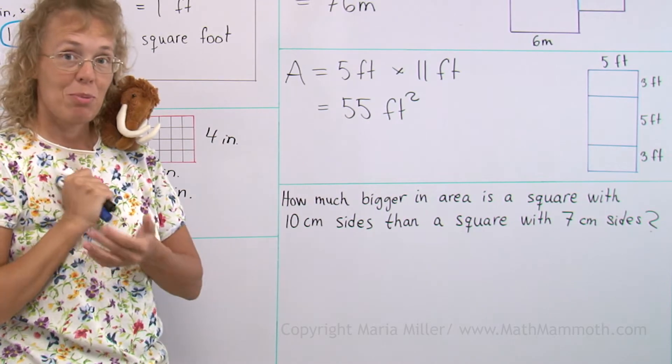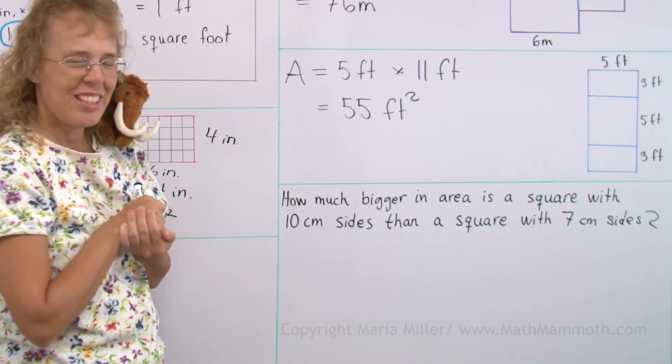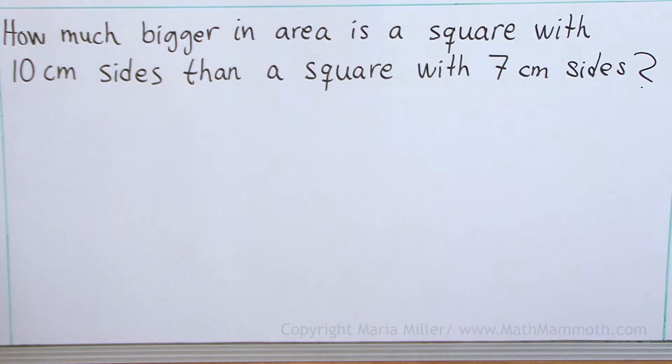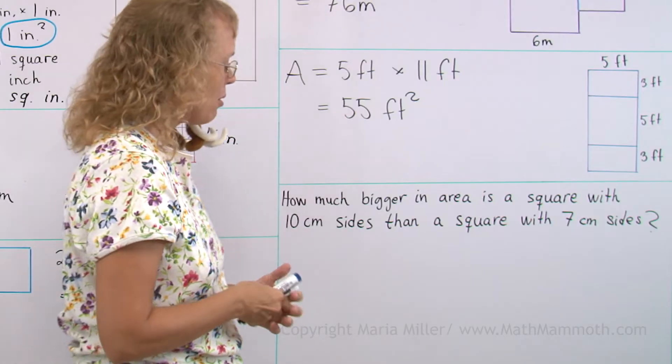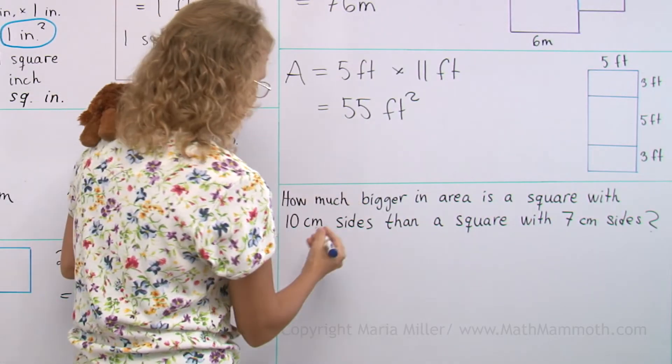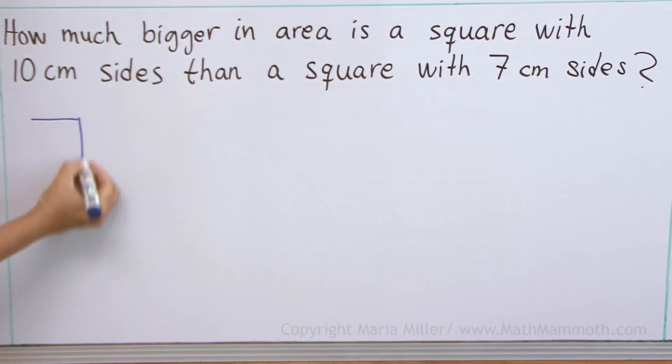Lastly, I have a problem without the picture. So let's see how that goes. How much bigger in area is a square with 10 centimeter sides than a square with 7 centimeter sides? For example, I'm just sketching, let's say that you have one square that is 7 centimeters.